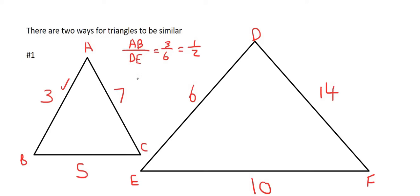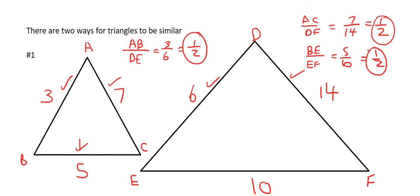If you then had to look at AC over DF you would get 7 over 14 which is the same as 1 over 2. And then the last one if you had to look at BE over EF you would get 5 over 10 which is the same as 1 over 2. So later on in the lesson I'll show you exactly how to do it in the exam but this is just an introduction.